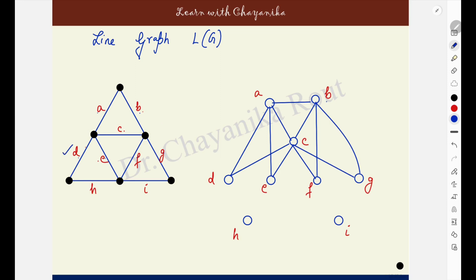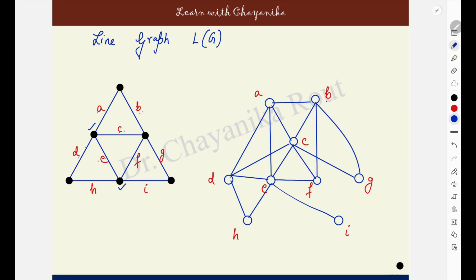Then, come to edge D. It is having these two end points shared with A, C, E and H. So D is adjacent to A and C — make it adjacent to E and to H. Next, come to edge E. It is having these two end points which are shared with A, C, D, F, H and I. E will be made adjacent to A, C, D — already done — and it will be made adjacent to F, H and I.